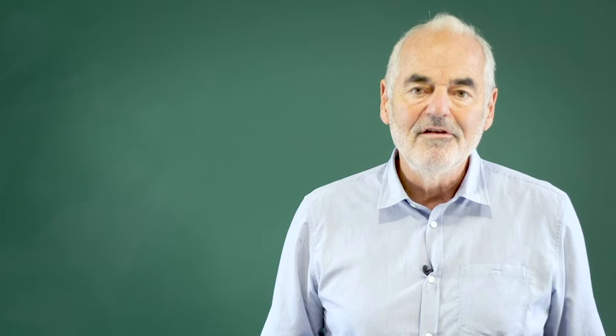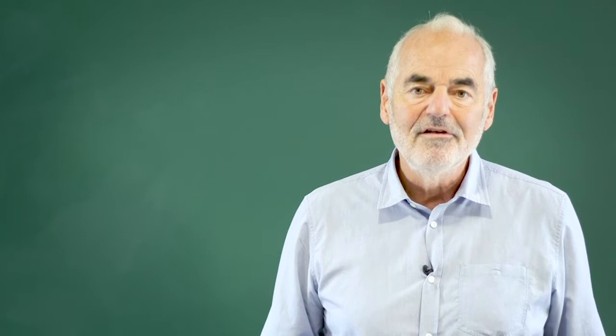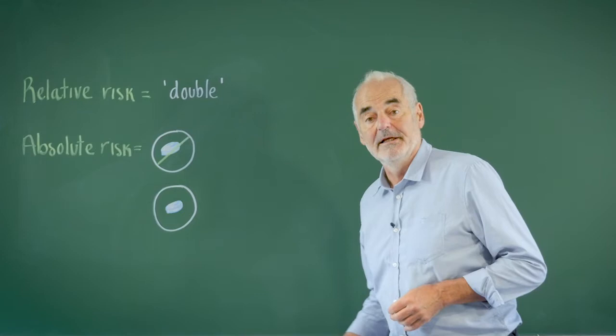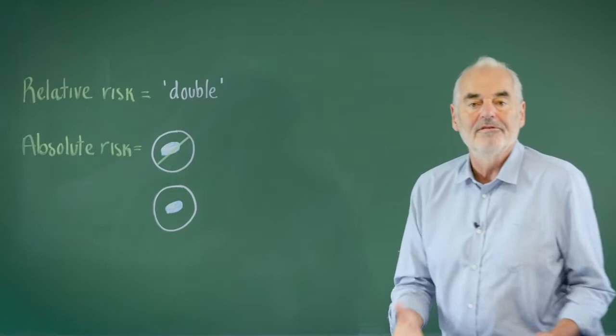Let's look at how that risk could have been communicated better. The claim of a doubling of risk is known as a relative risk and these are very often used by the media. But the problem is that it's impossible to interpret this doubling and know its importance without knowing double what.